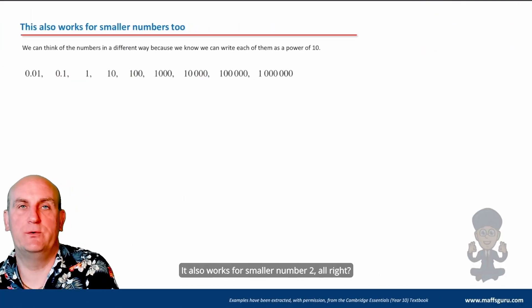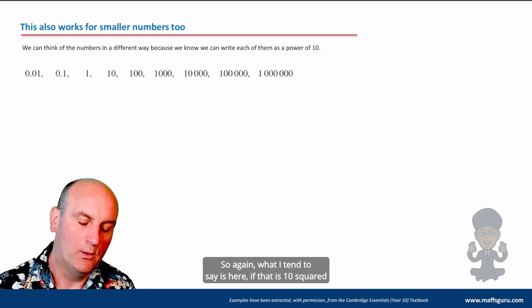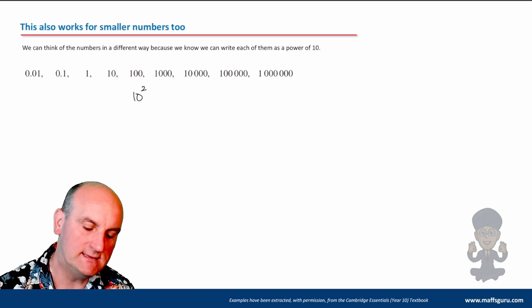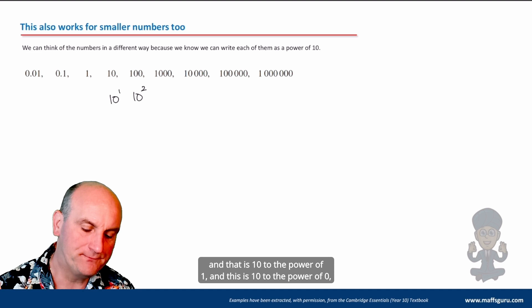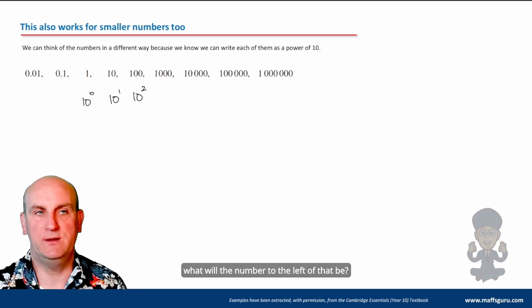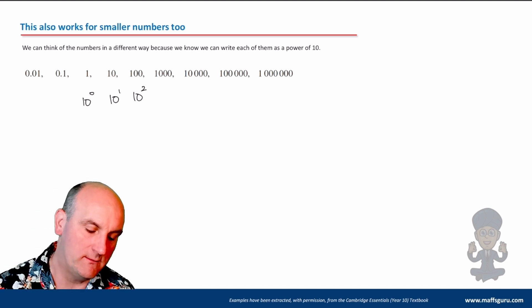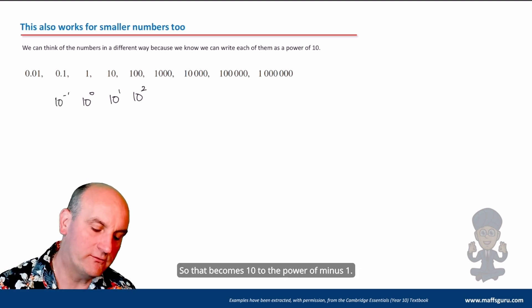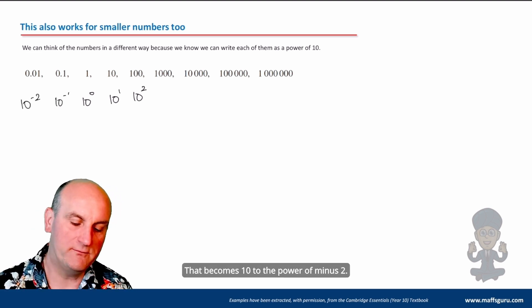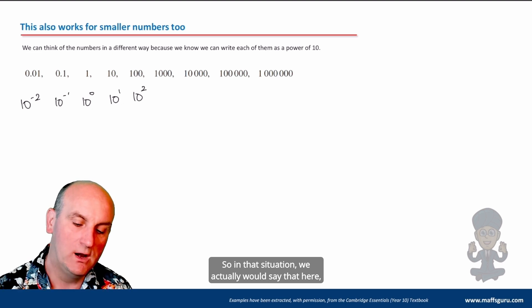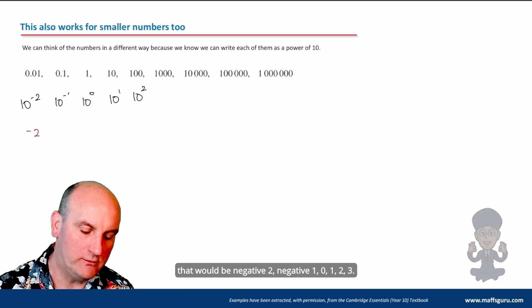It also works for smaller numbers too. So again, what I tend to say is here, if that is 10 squared, and that is 10 to the power of one, and this is 10 to the power of zero, what would the number to the left be? We're just taking one off the power each time. So that becomes 10 to the power of minus one, that becomes 10 to the power of minus two.